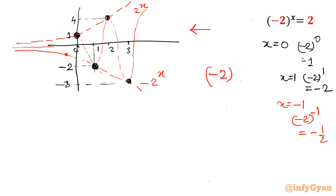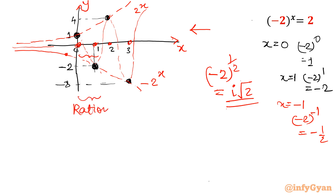(-2)^(1/2) — that is the case where we were getting i√2 as a solution. In that case we cannot show it on the real axis. Now consider the in-between terms — between 0 and 1. This is the extreme condition. We considered 0, 1, 2, 3. Now you have to consider the rational values in between. What we concluded: if Q is odd, we get a real solution; if Q is even, we get a complex solution. See how much complexity there is.